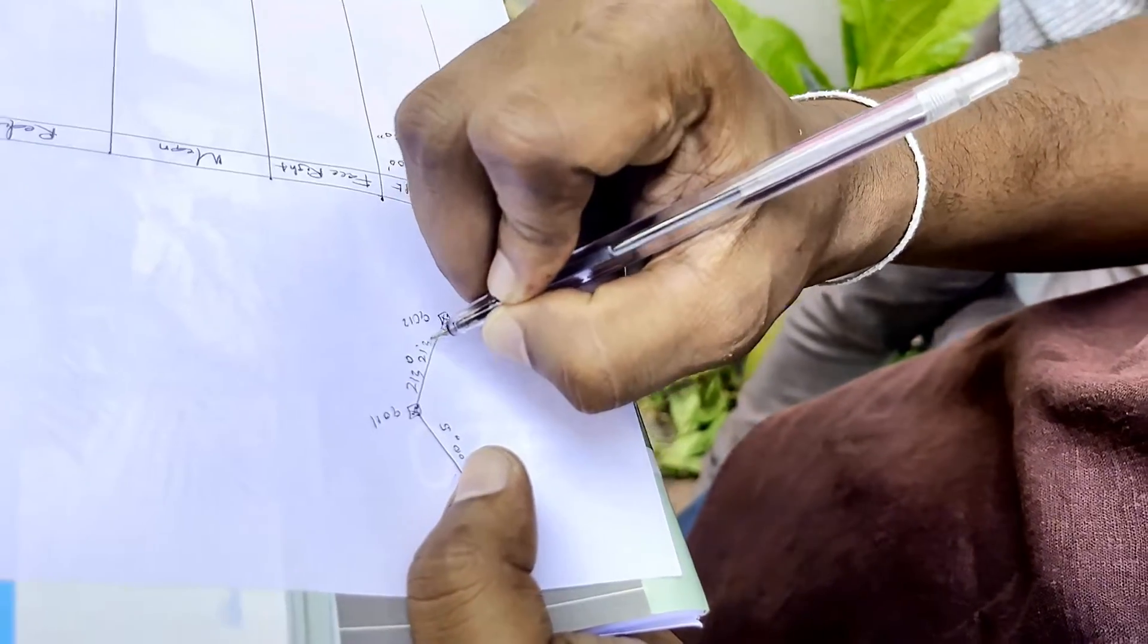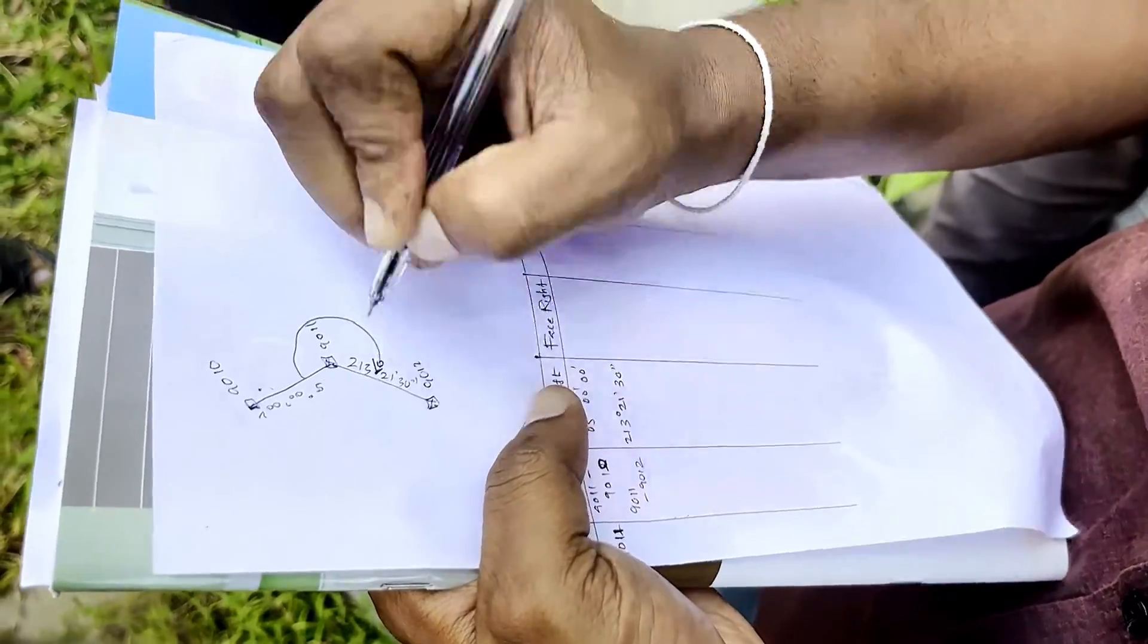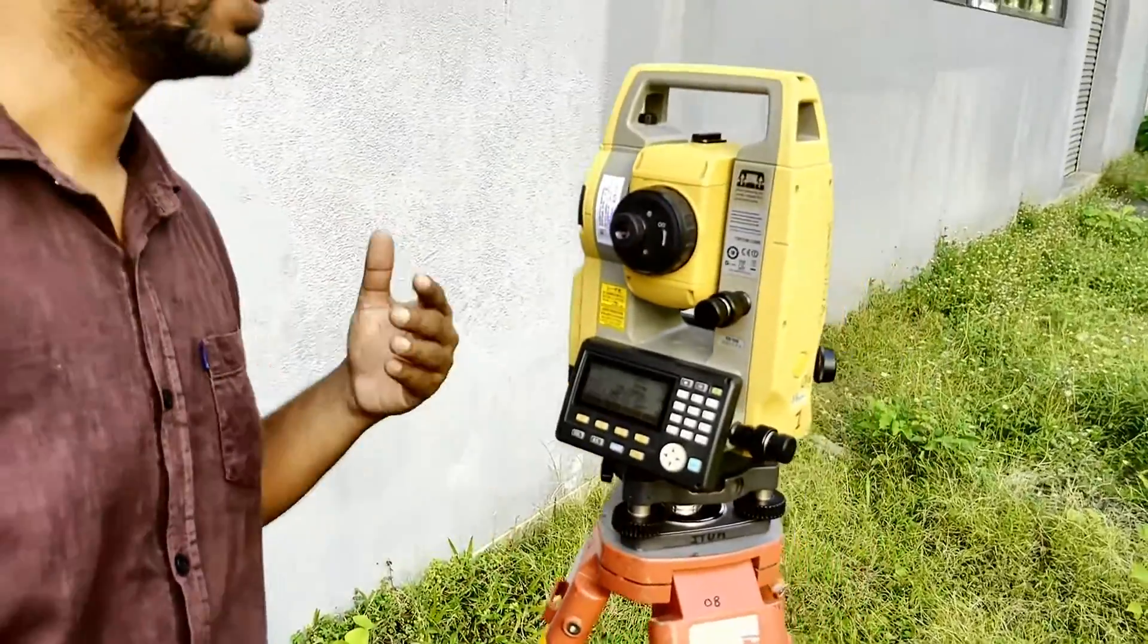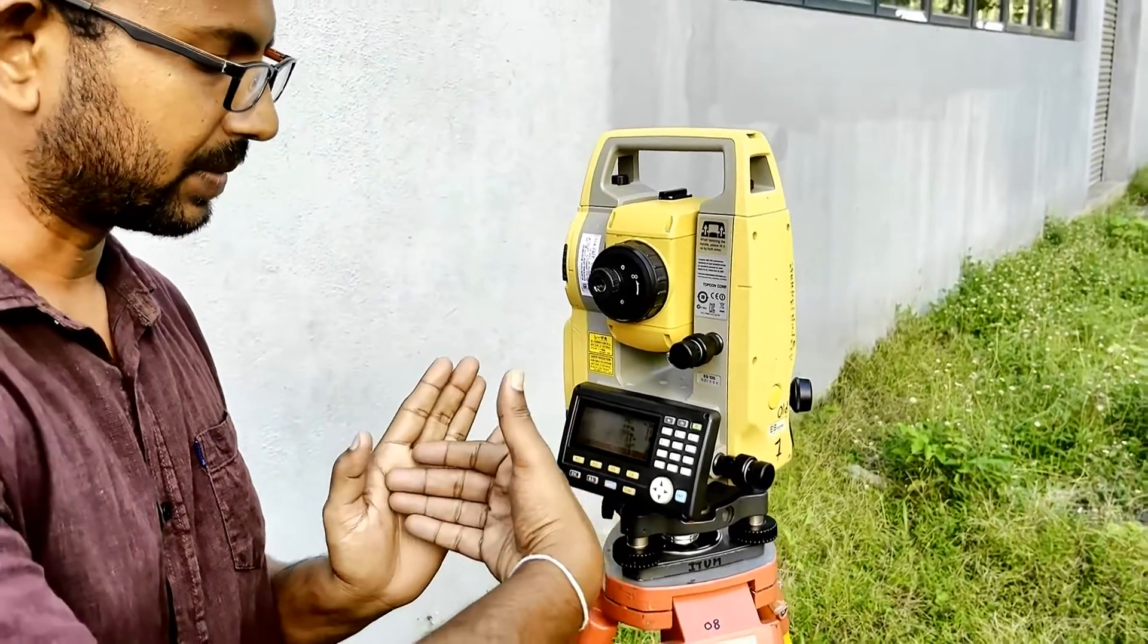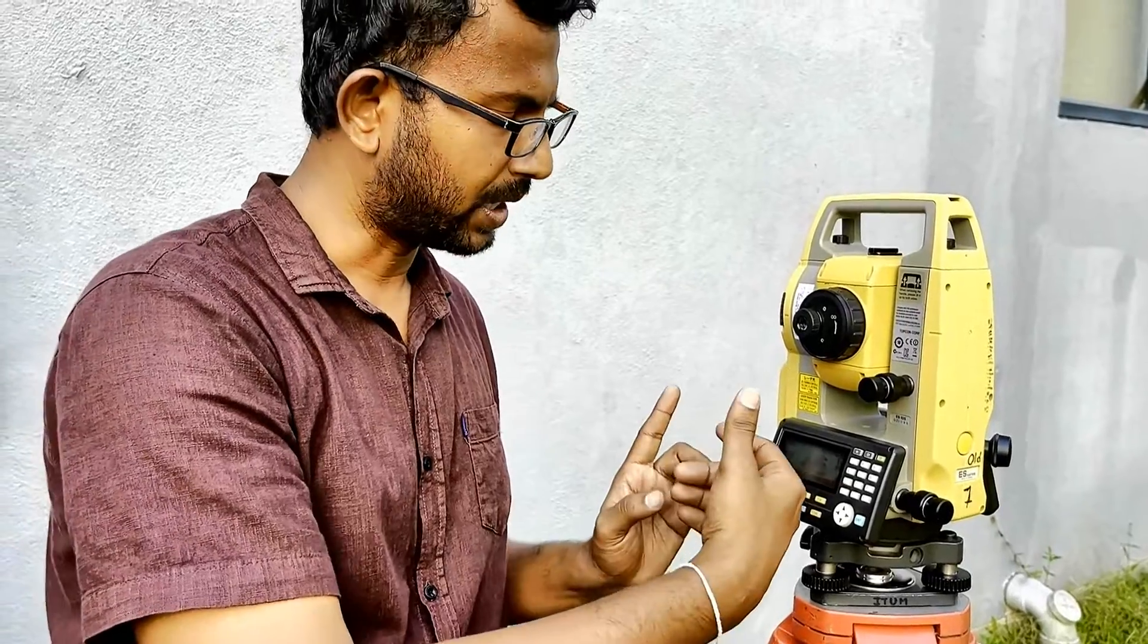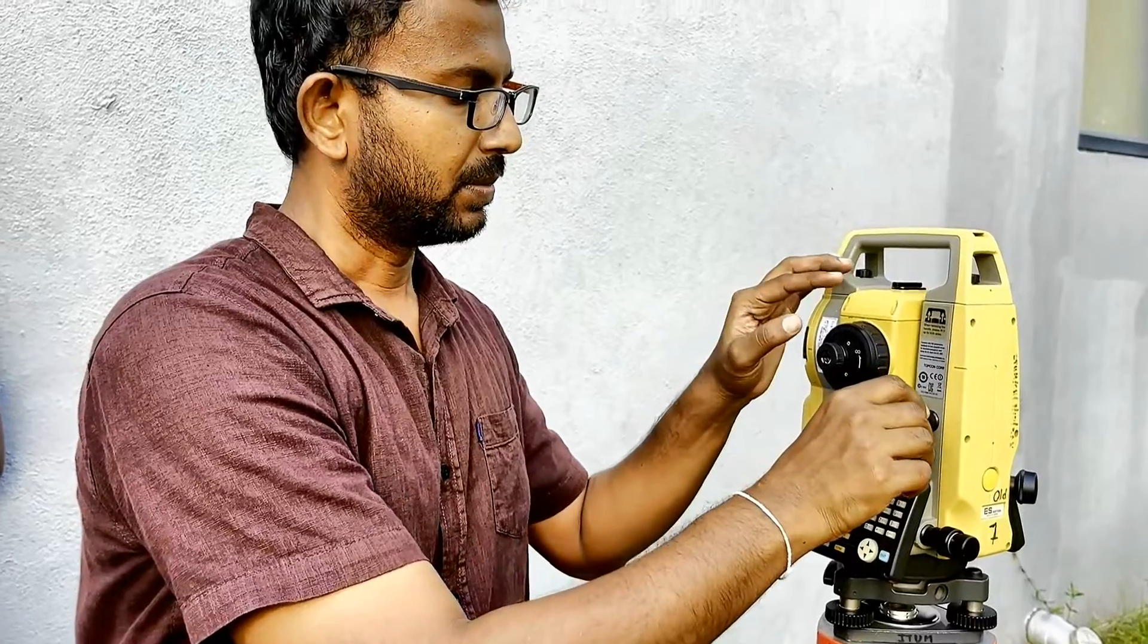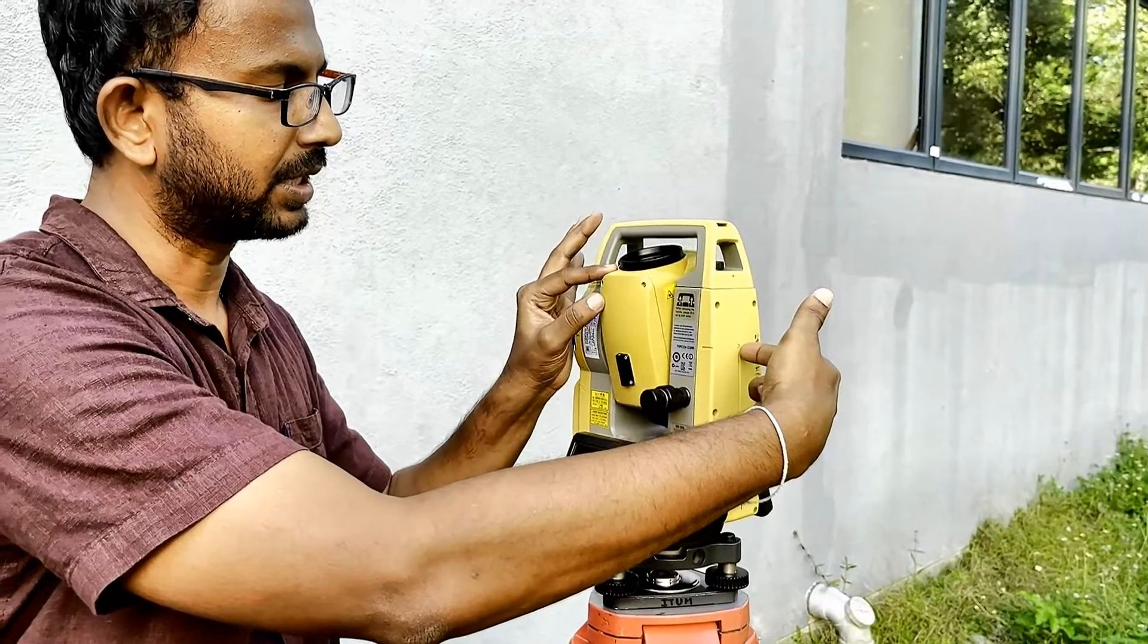So if I draw it like this, 9010, this is 9011, this is 9012. Here we have observed 5 degrees, here we have observed 213 degrees 21 minutes 30 seconds. So this is the angle we have turned, clockwise angle.